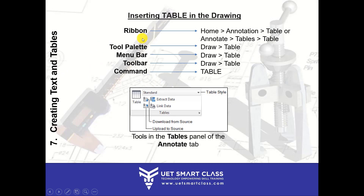You can invoke the table tool by going to the ribbon in the Home tab under Annotation where you'll find Tables, or in the Annotate tab under Tables. There are also options in the tool palette under Draw, the menu bar under Draw > Table, the toolbar Draw > Table, or you can type 'table' in the command line and press Enter.